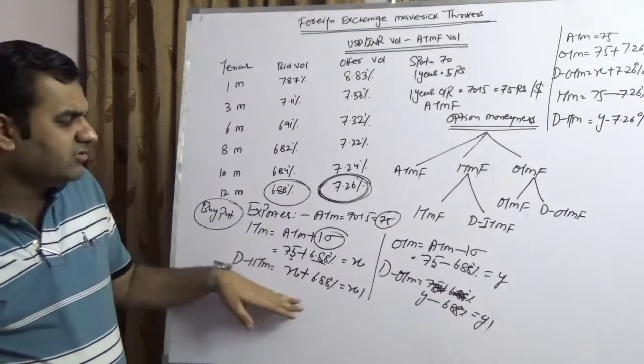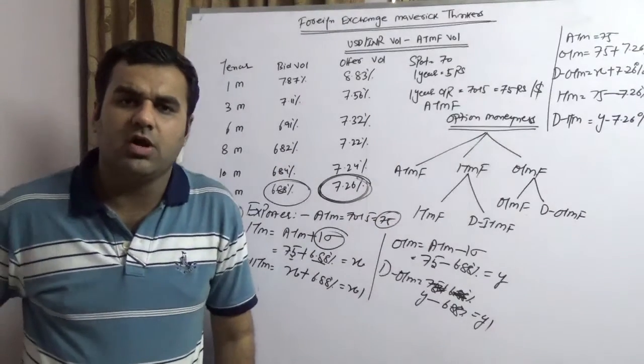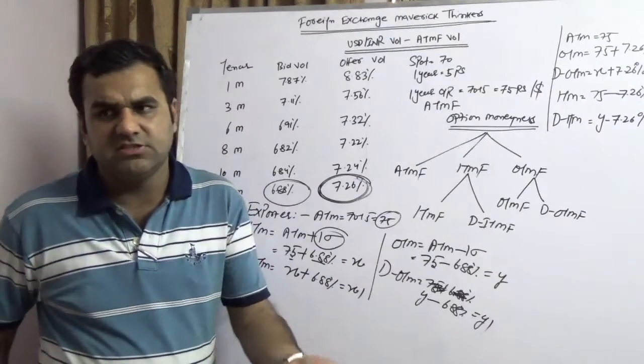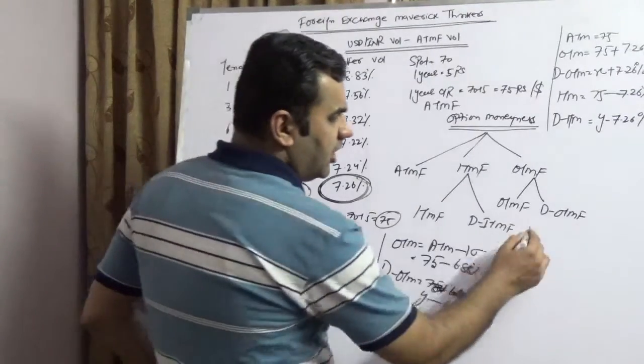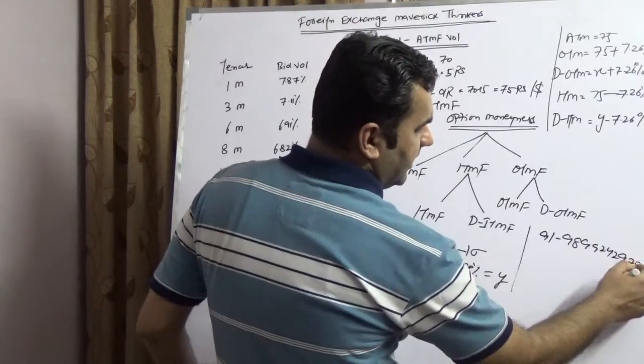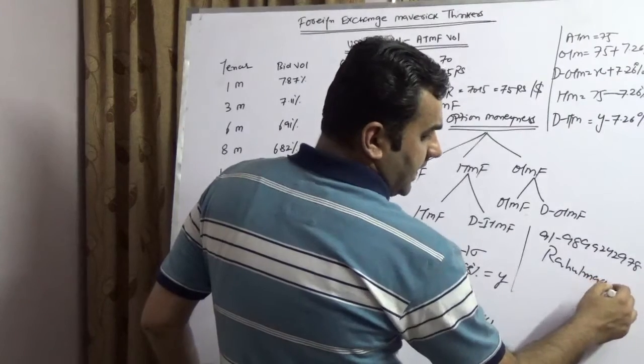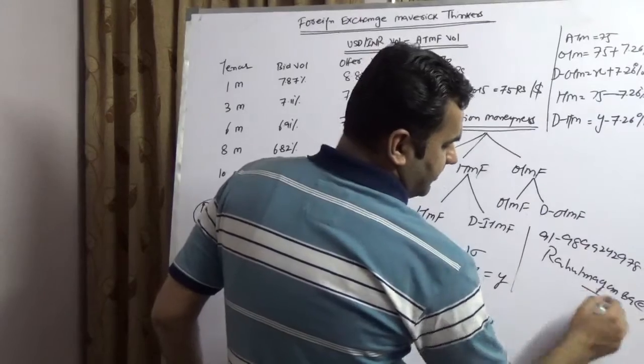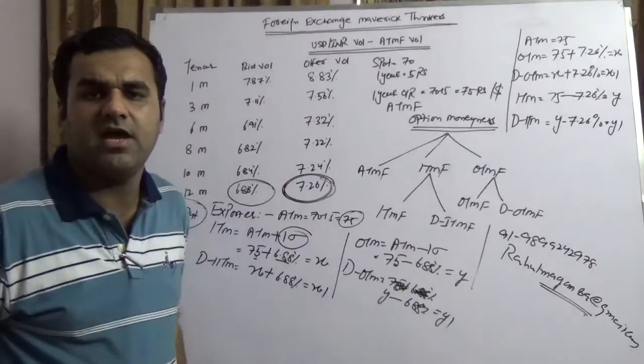I hope you got a copy of our latest magazine which is Maverick Treasure. The following magazine is scheduled three or four days from today. You're welcome to give me a call at +91 98992 42978. You are welcome to email me at rahunmagan89@gmail.com. At the end I would like to thank you for taking your time and have a great trading.